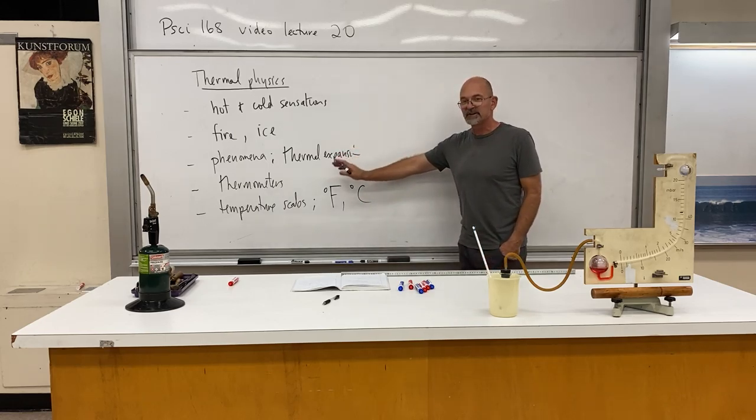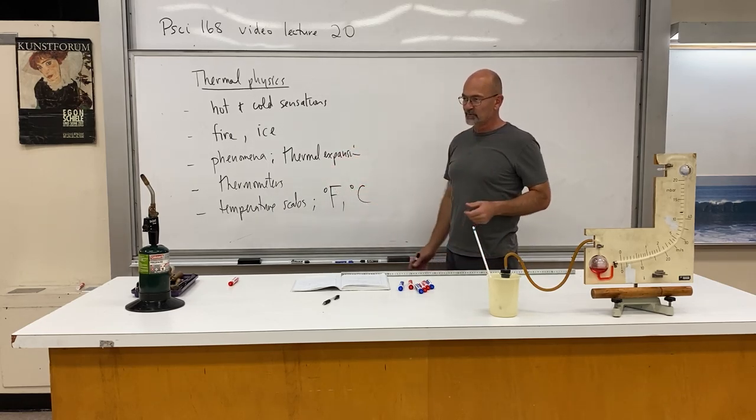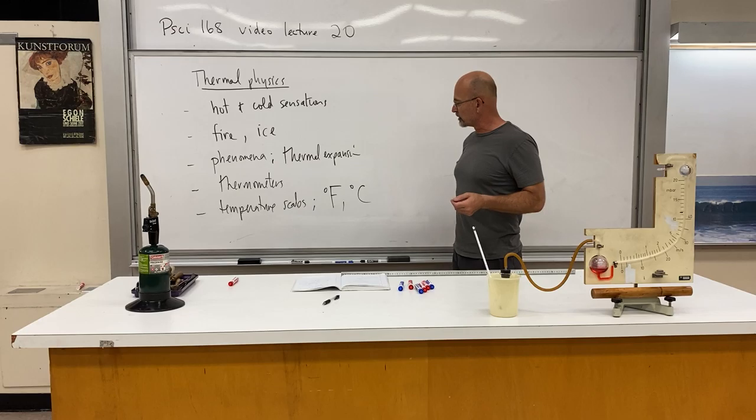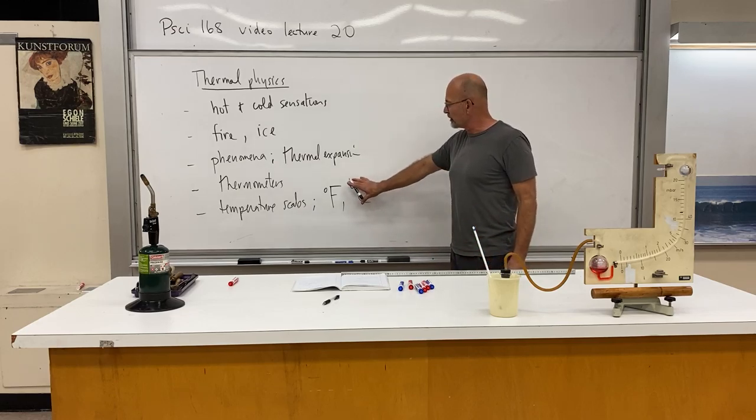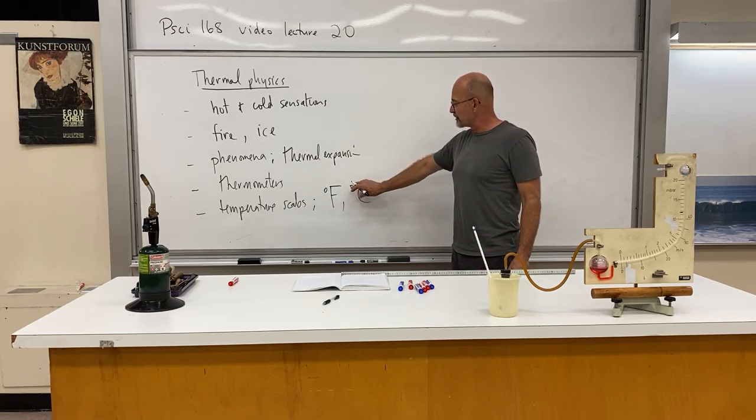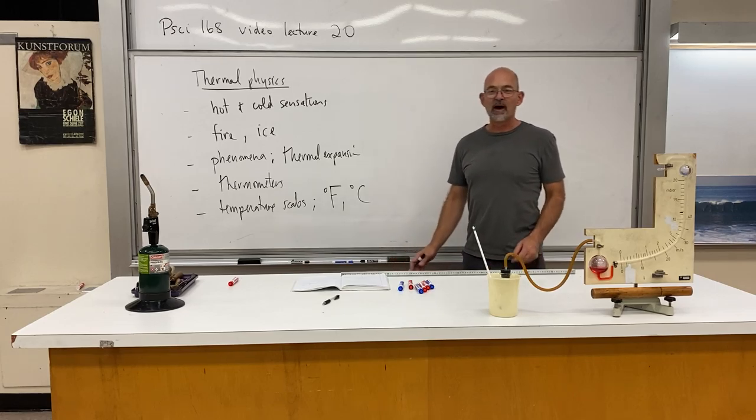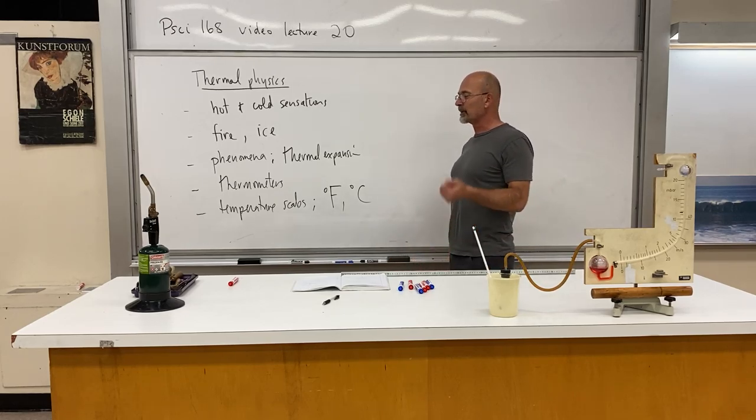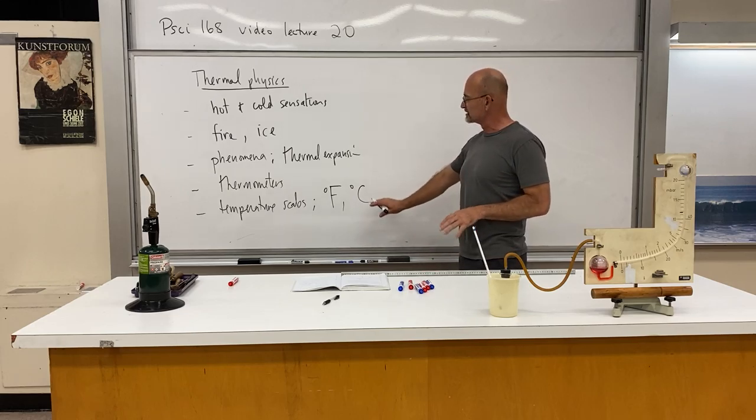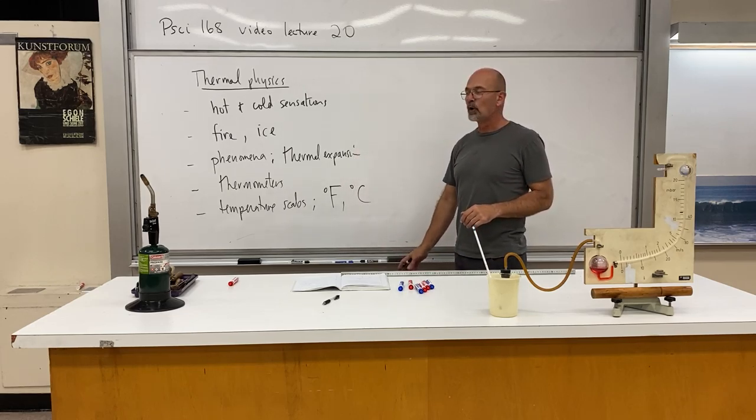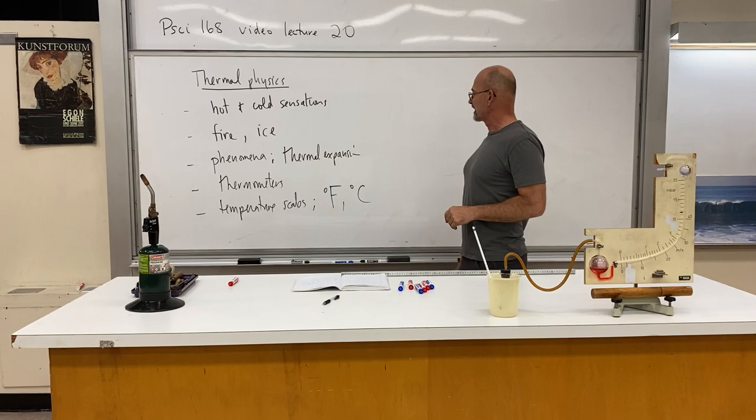And we decided that we would use degrees Fahrenheit and degrees Celsius. Now degrees Fahrenheit is still what they'll tell us in terms of what we hear in the news for the weather report, for instance. Degrees Celsius will be the unit of temperature that goes along with our other physical units. Kilograms, meters, seconds, degrees Celsius. The formulas are built to be most convenient that way.